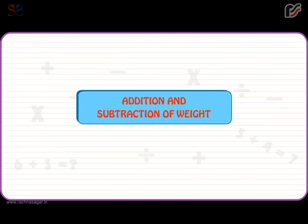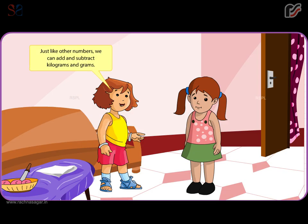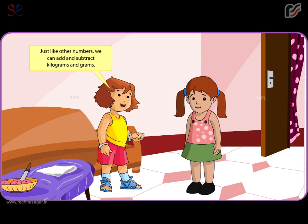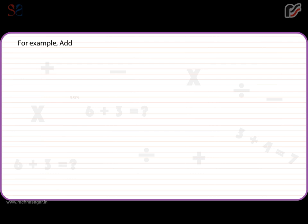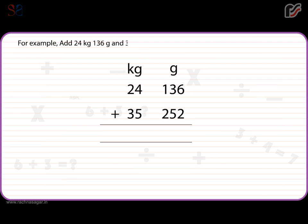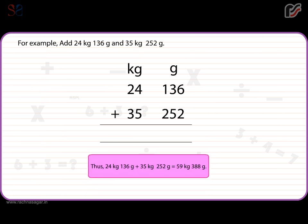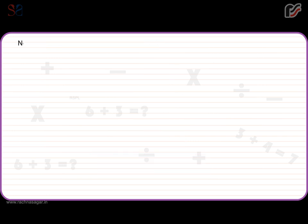Addition and subtraction of weight. Just like other numbers, we can also add and subtract kilograms and grams. For example, add 24 kilograms 136 grams and 35 kilograms 252 grams. Thus, 24 kilograms 136 grams plus 35 kilograms 252 grams is equal to 59 kilograms 388 grams.